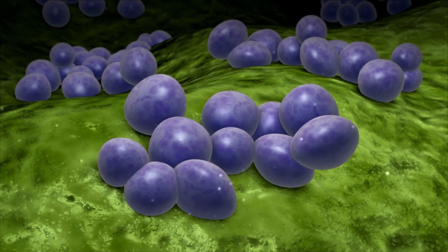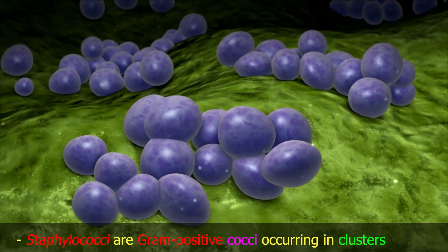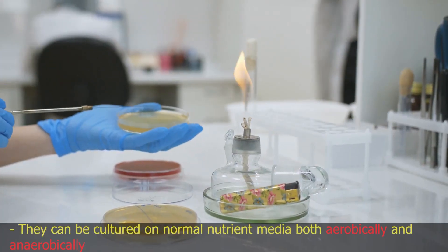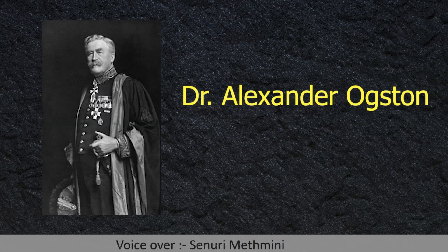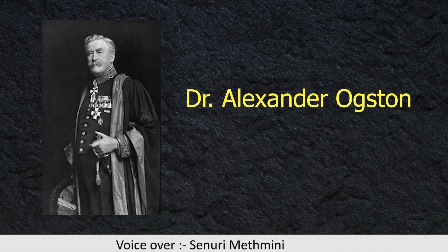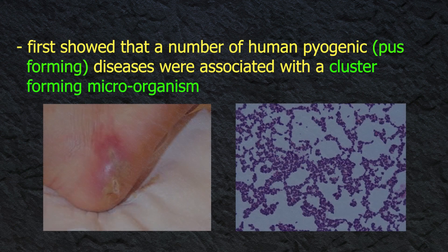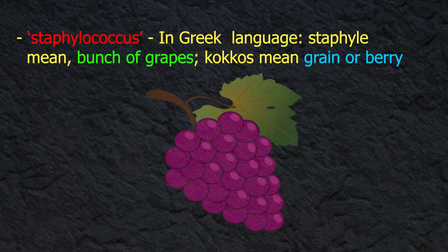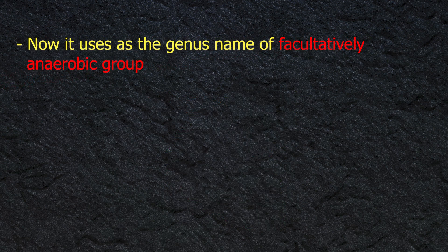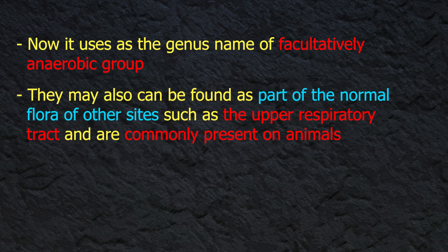Staphylococci are gram-positive cocci occurring in clusters. They can be cultured on normal nutrient media both aerobically and anaerobically. In 1880, Dr. Alexander Ogston first showed that a number of human pyogenic, pus-forming diseases were associated with the cluster-forming microorganism. He introduced the name Staphylococcus — in Greek, 'staphylē' means bunch of grapes, and 'coccus' means grain or berry — now used as the genus name.